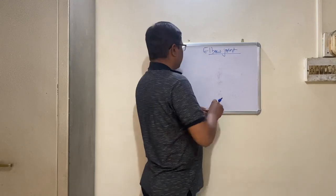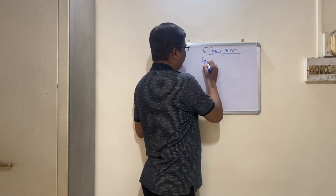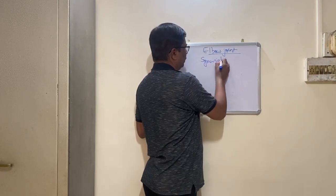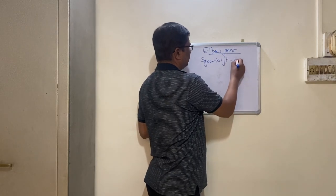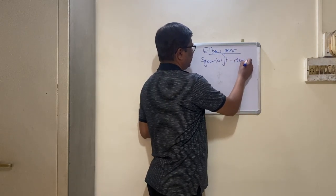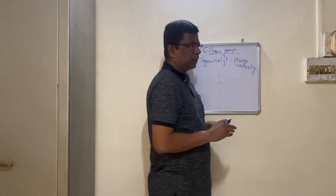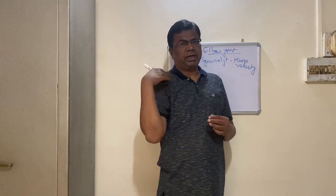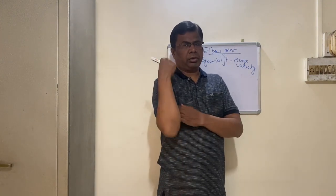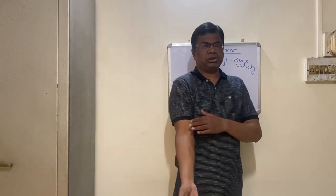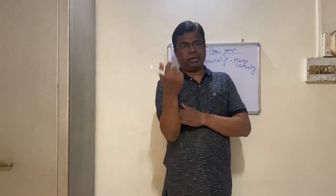The classification of the elbow joint: it is a synovial joint — basic classification — and the sub-classification is hinge variety. A hinge allows movement like a door, either opening or closing. Similarly, the elbow joint is a uniaxial joint; there is movement on only one axis, that is either flexion or extension.